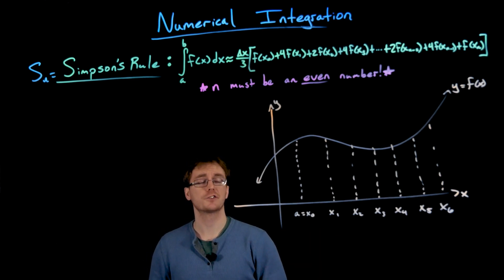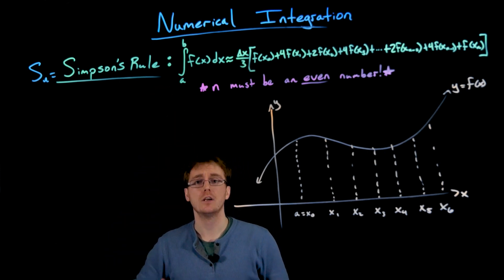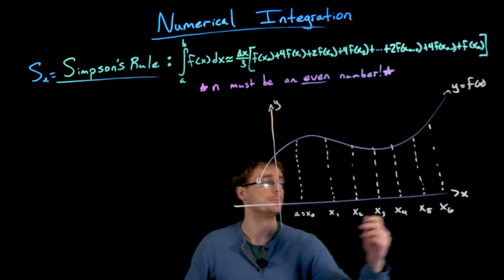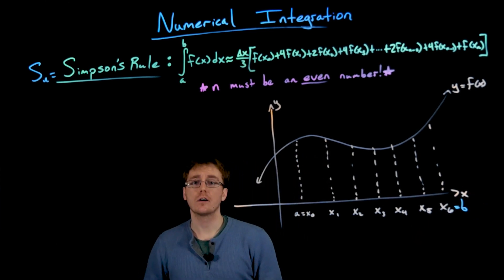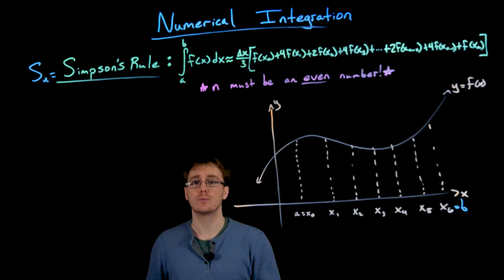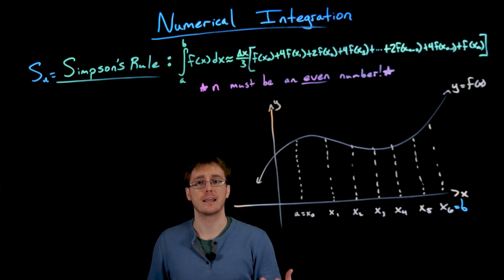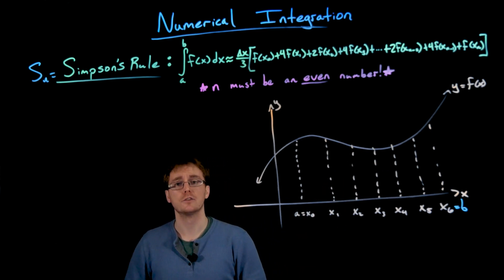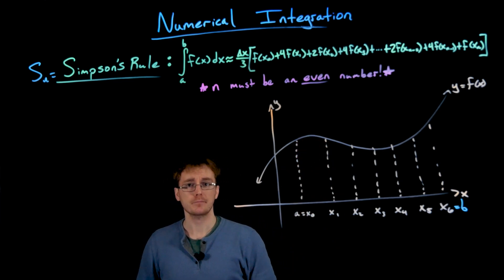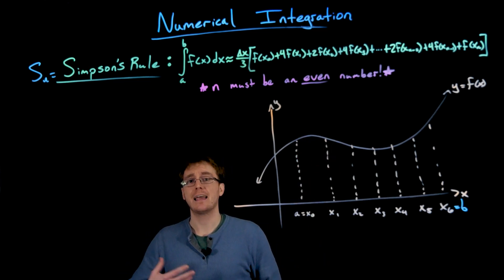Here I have a picture of some arbitrary function and its curve, y equals f of x. When we're working with a definite integral, we always have the interpretation of finding the area between our curve and the x-axis over the interval from a to b. In some of our previous approximation methods, we've seen that we can approximate the area underneath this curve using rectangles — that's what we did for the left endpoint, right endpoint, and midpoint rule. But we also started to see we could approximate these regions using shapes other than rectangles. Our trapezoidal rule used trapezoids to find the area in each region instead of rectangles.